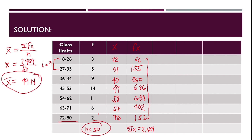Next step: subtract the mean from each value in the data set. Computing x minus 49.18: 22 minus 49.18 equals negative 27.18; 31 minus 49.18 equals negative 18.18.